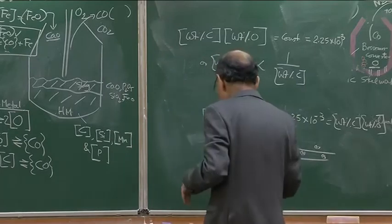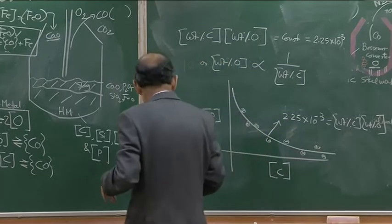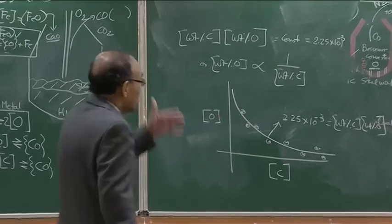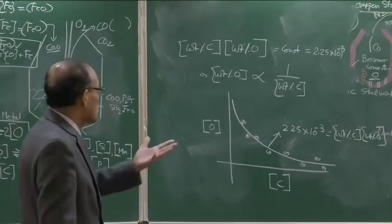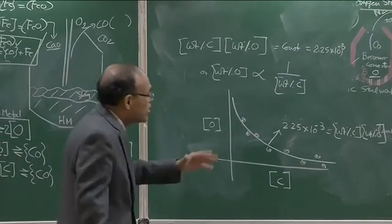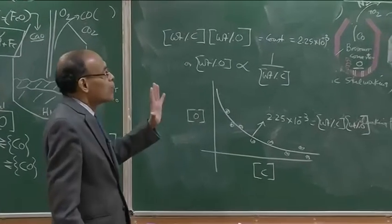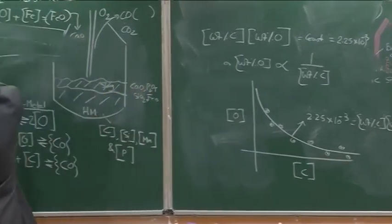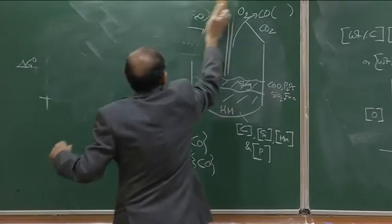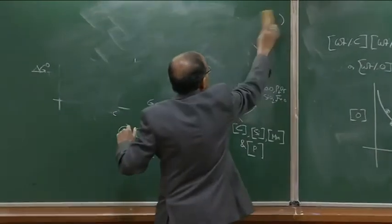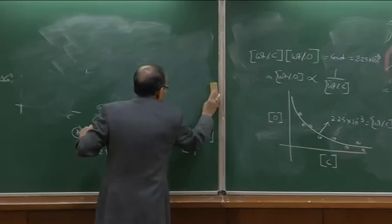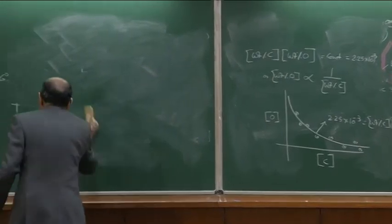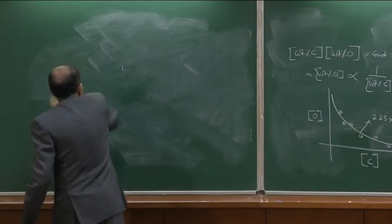We will continue from this point in the next class. We will discuss all reactions — carbon-oxygen, silicon-oxygen, manganese-oxygen, and phosphorous-oxygen — and develop understanding of the thermodynamic part. Then we will talk about the kinetics of the reactions, which will be equally interesting, and explain why the rate of the steel making process is very large in the oxygen steelmaking process.